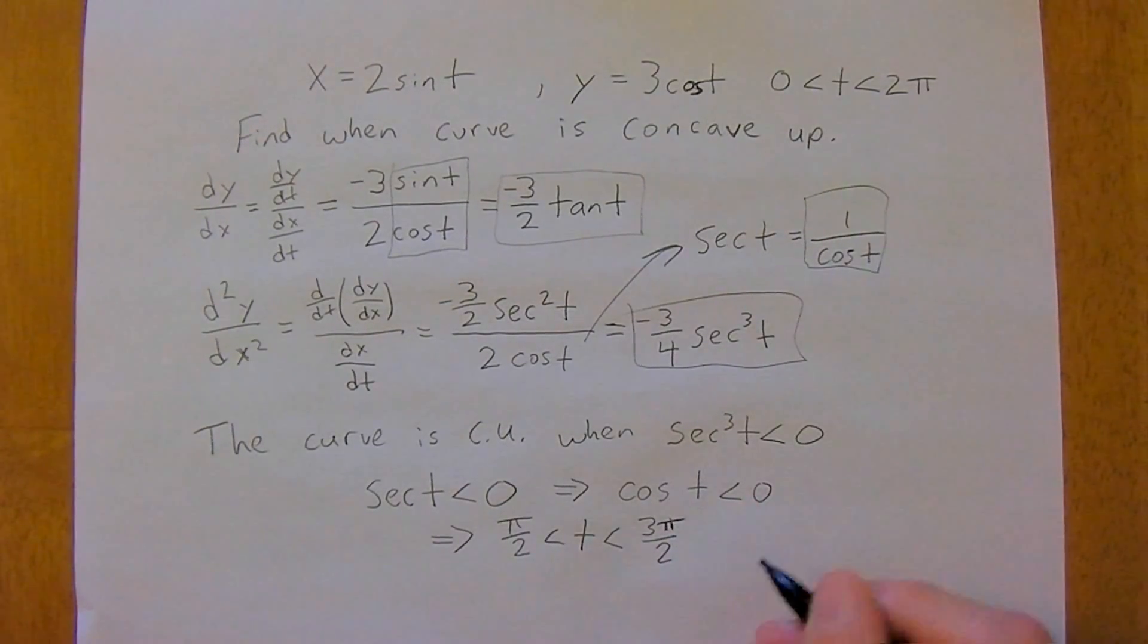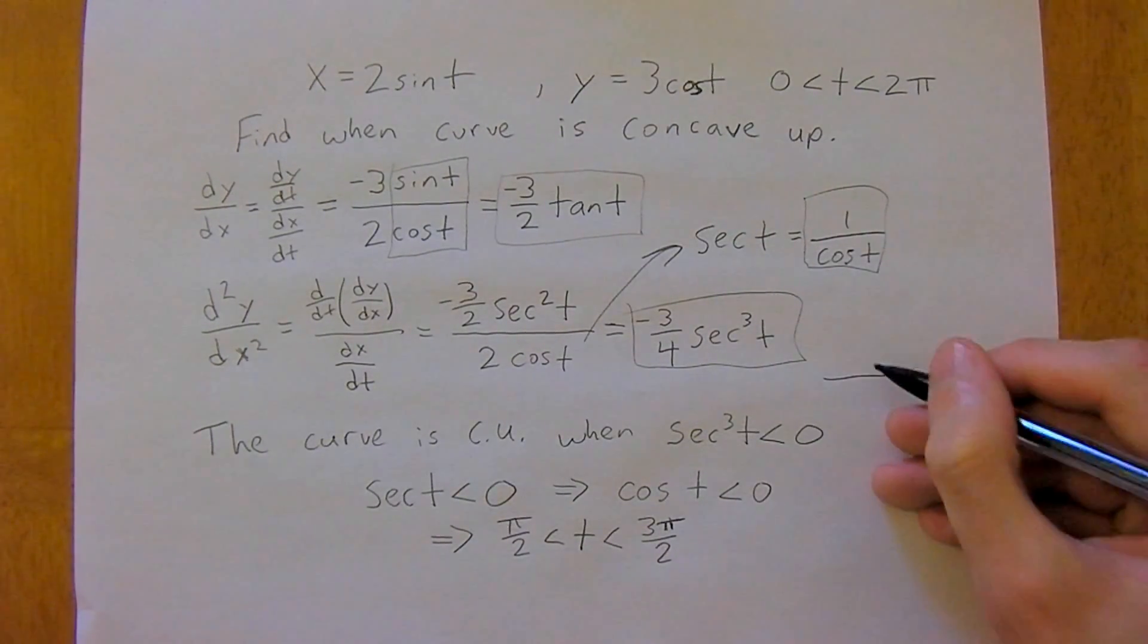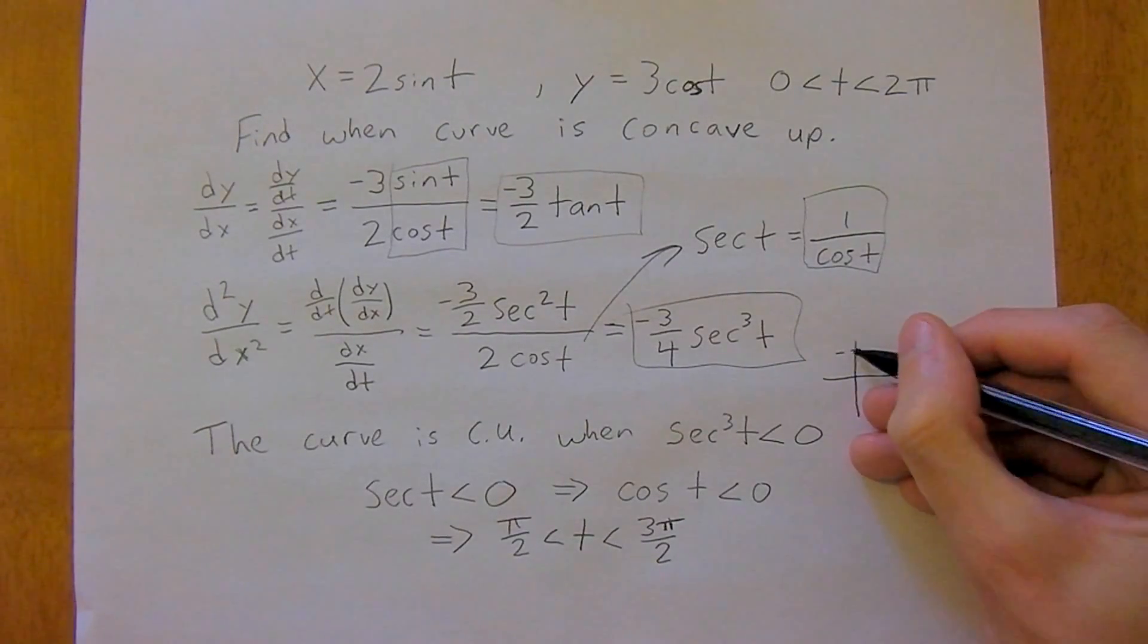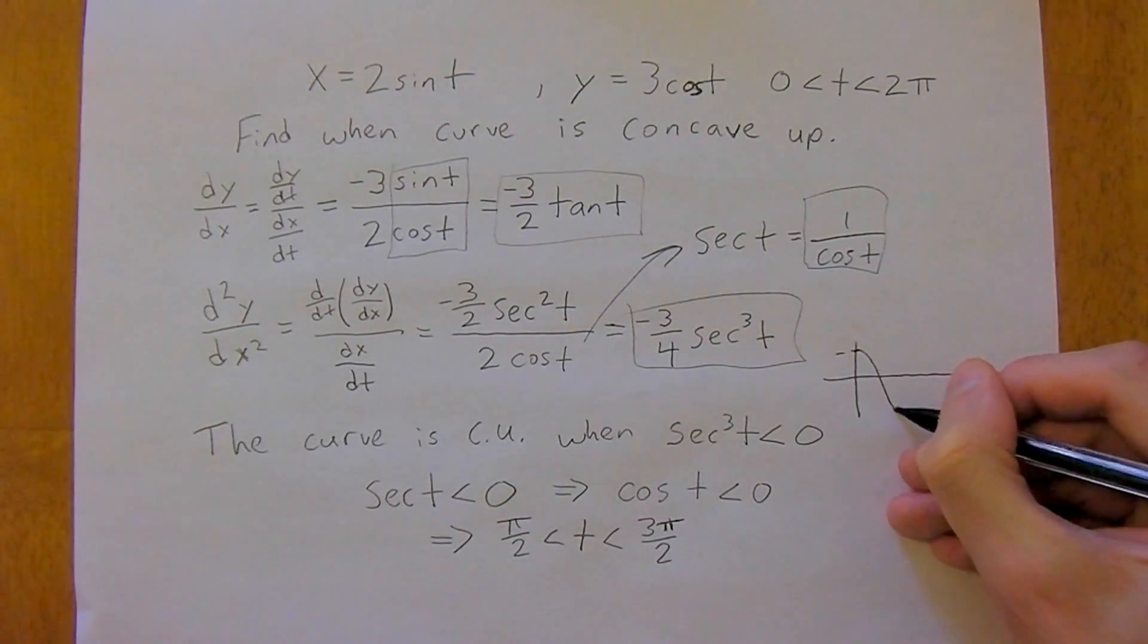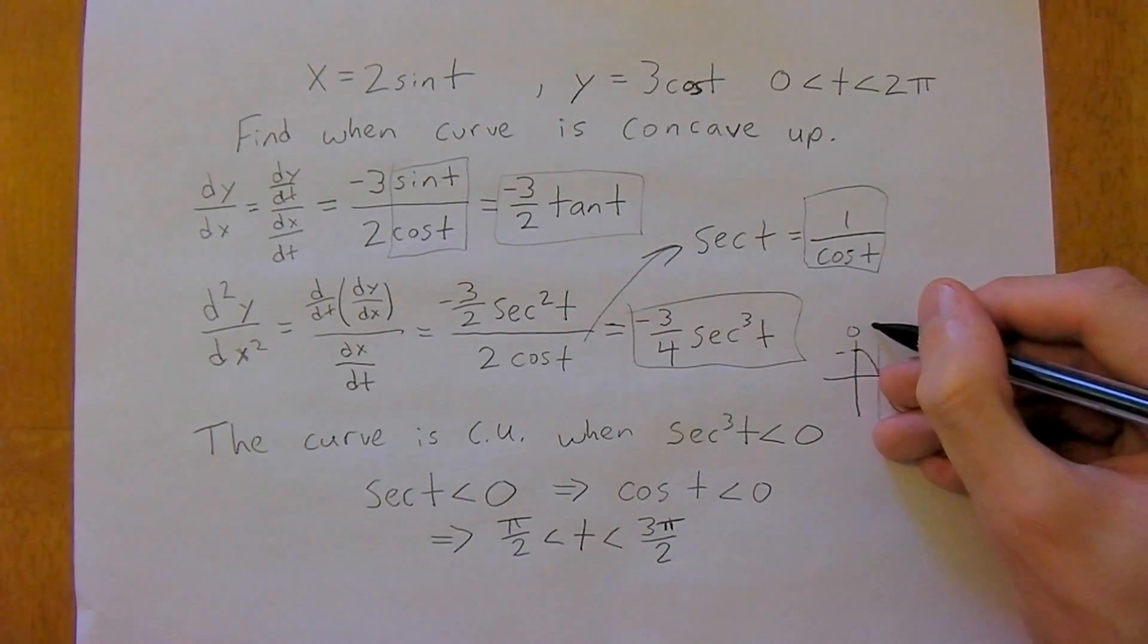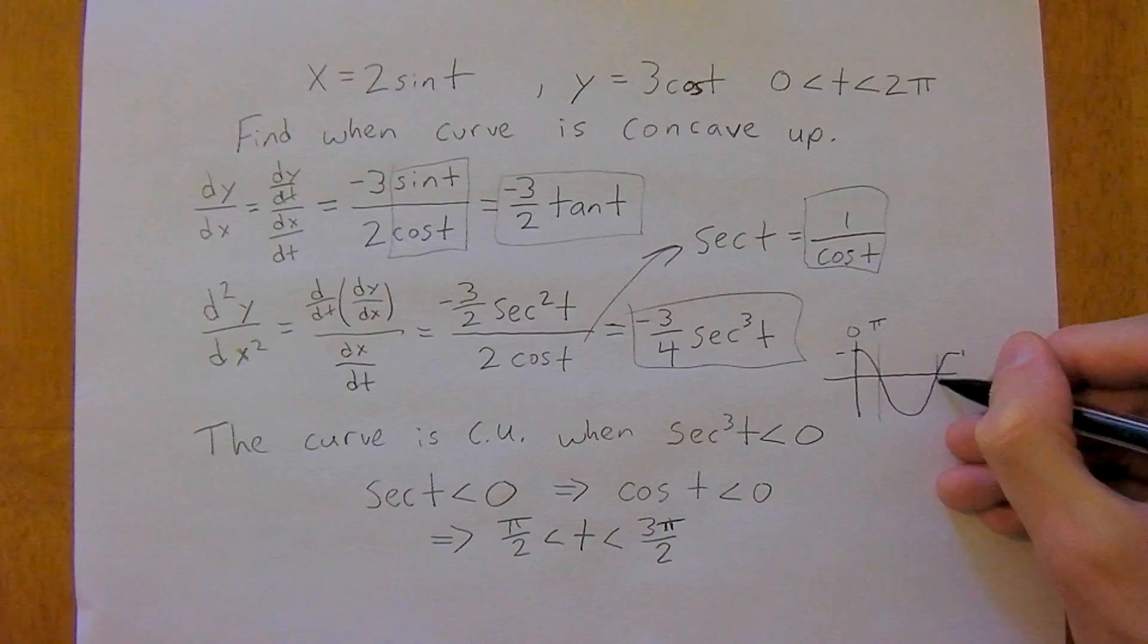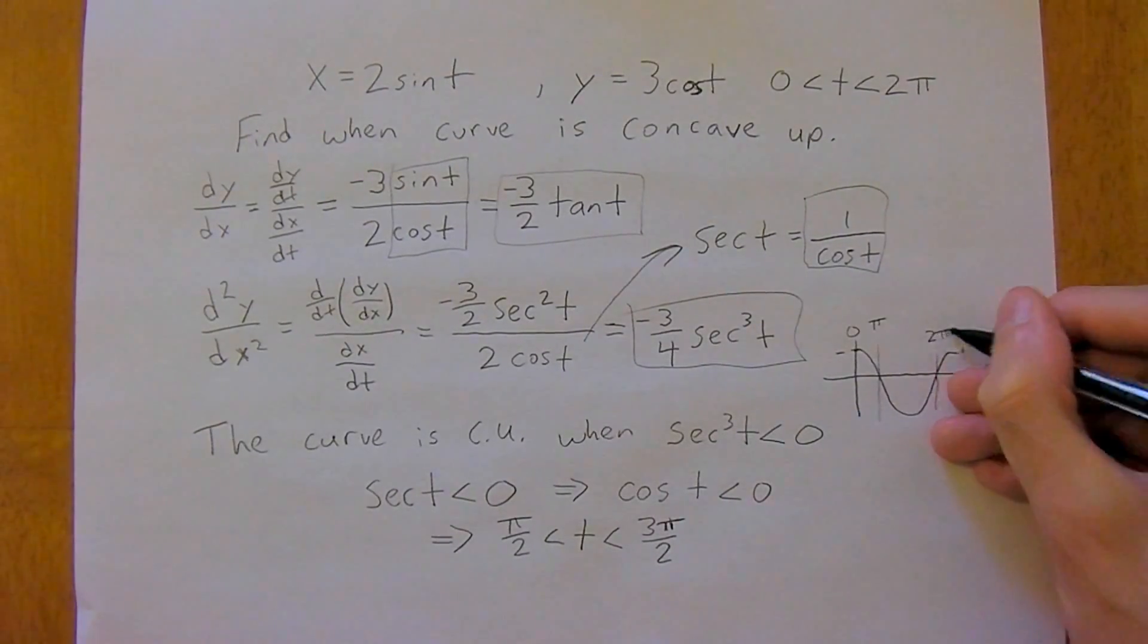And if this is confusing, I recommend just plugging it into your calculator and graphing it. And, you know, the graph of cosine starts at 1, then it goes down and back up to 1 again. So at this point here, start at 0, then we've got pi, and it goes up to 2 pi.